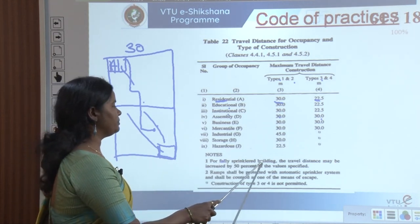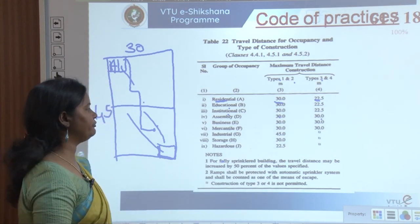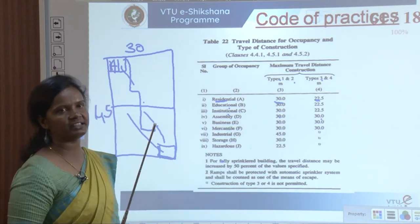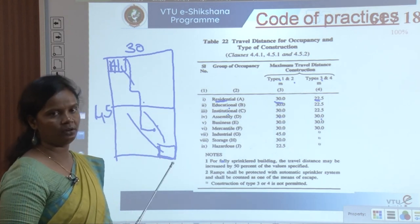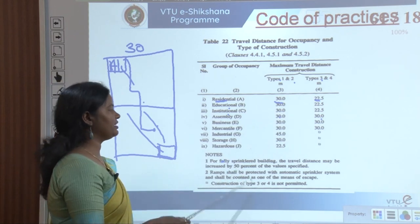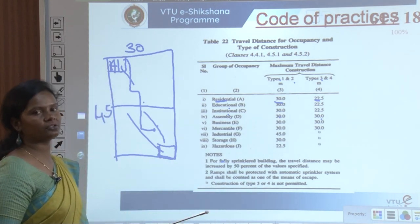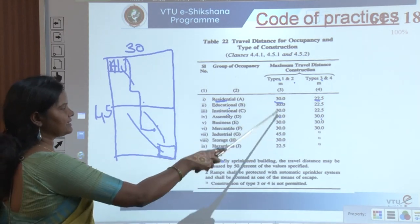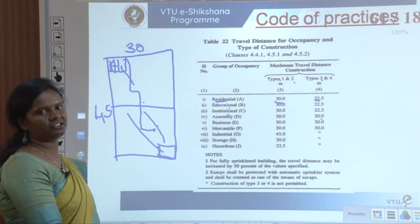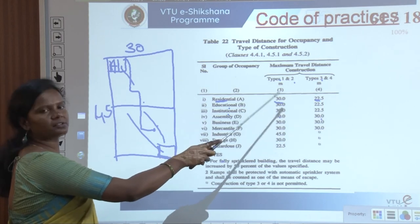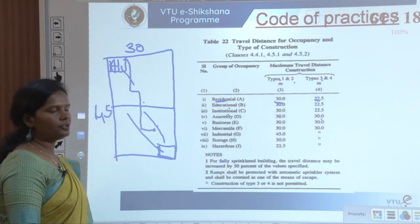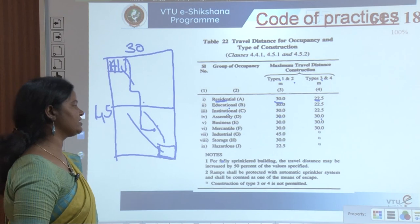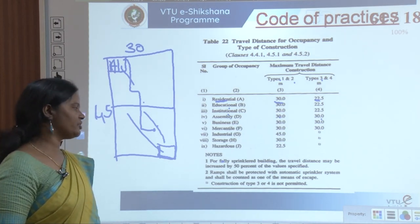For fully sprinklered buildings, the travel distance may be increased by 50 percent of the specified value — so 30 metres becomes 45 metres. This applies to buildings completely designed with a sprinkler system, not just fire extinguishers. Ramps shall be protected with automatic sprinkler systems and shall be counted as one of the means of escape.